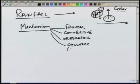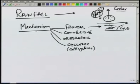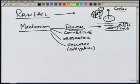In the frontal type, there is cold and warm air meeting. There is a front which has cold air on one side and warm air on the other side. The warm air may be moving or the cold air may be moving, but the net result is that the warm air gets lifted above the cold air, and as it gets lifted it becomes colder, then it will cause condensation and precipitation. That is the mechanism of frontal precipitation.